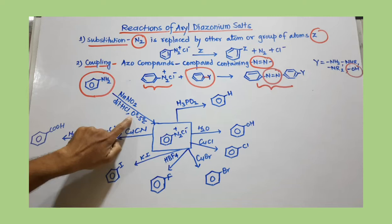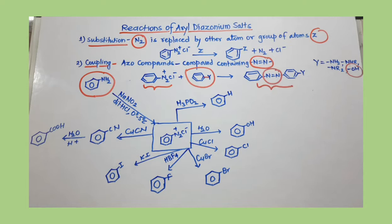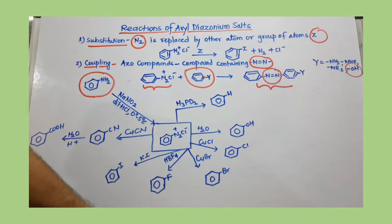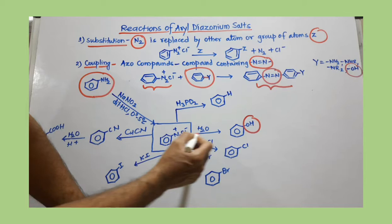When aniline is diazotized using sodium nitrite and dilute HCl, maintaining a temperature of 0 to 5°C, we get phenyl diazonium salt. Once the diazonium salt is produced, we can start different reactions. In the presence of water, phenol is produced — the NH₂ group is replaced with an OH group.